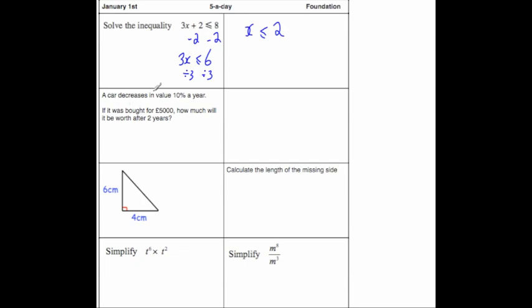Next question. A car decreases in value by 10% each year. It was bought for £5,000, how much will it be worth after 2 years? Let's do after 1 year first. 10% of £5,000 is £500.